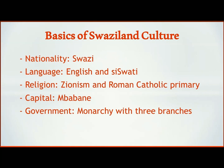In terms of the judicial branch — the third branch of government — there is a Supreme Court of the Judicature, consisting of the Supreme Court and a High Court. The monarch appoints the justices of the Supreme Court as well. Because of the monarchy system, there is less democracy than what we would see in the United States.